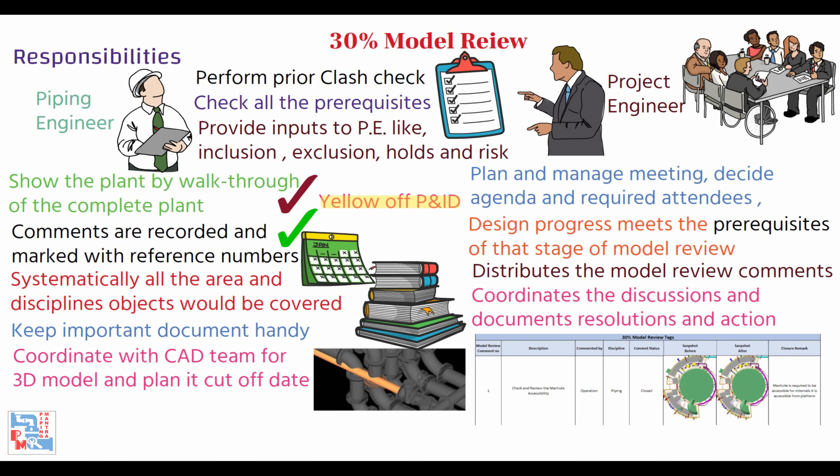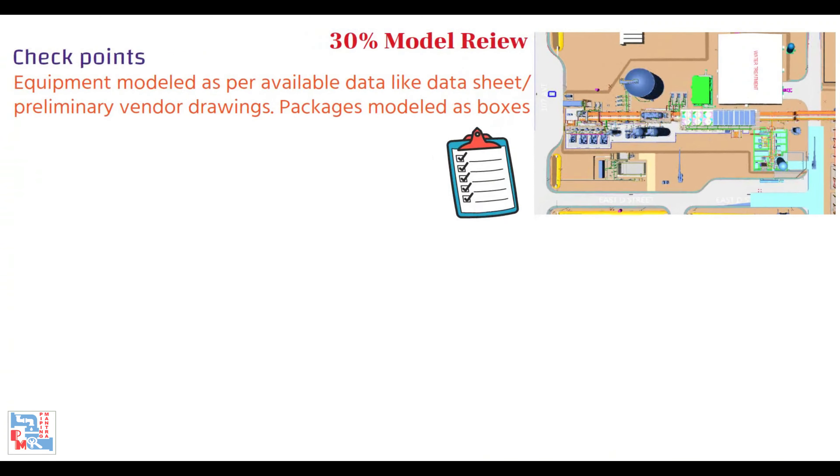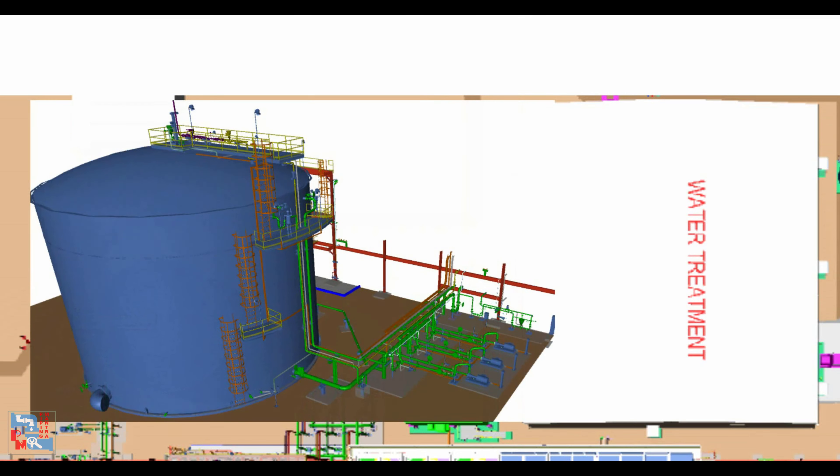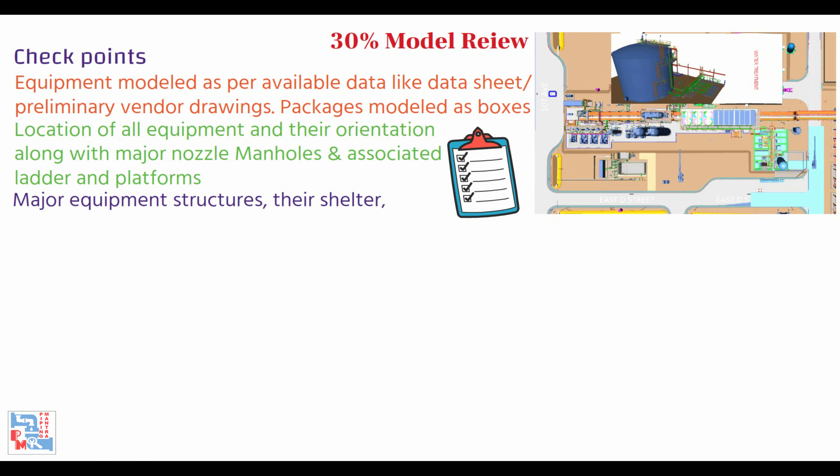Now let's look upon the checkpoints of the 30% model review. First, equipment modeled as per the available data like data sheet, preliminary vendor drawings—packages are modeled as boxes. Location of all equipment and their orientation along with the major nozzle, manholes, and associated ladders and platforms. Major equipment structures, their shelter and foundations are modeled and checked.